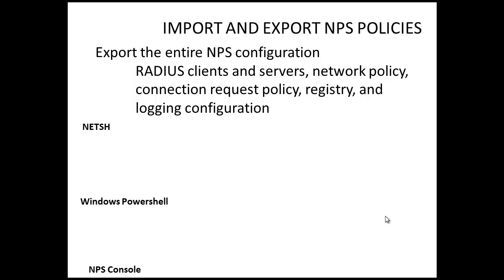Whatever you have configured — your RADIUS clients, your servers, your network policies, your connection request policies and so on — all of it gets exported. There are three methods that we can use to import and export this NPS configuration: we can use the NetSH command line, we can use Windows PowerShell, and we can use the NPS console itself.